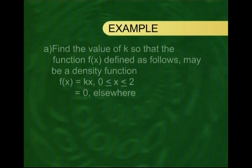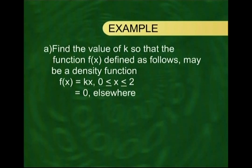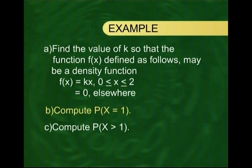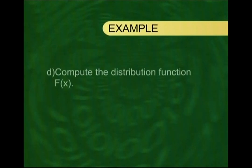As you now see on the screen, the example that we were considering was: find the value of k so that the function f(x), defined as f(x) = kx in the range 0 to 2 and 0 elsewhere, may be a density function. Compute the probability that x = 1, as well as the probability that x > 1. Also compute the distribution function F(x).